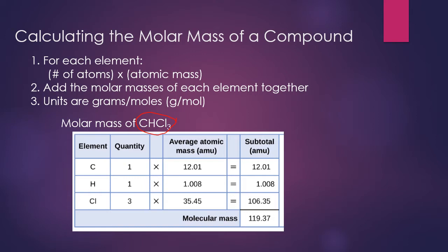For carbon, there is no subscript, so we assume one atom. The same goes for hydrogen. For chlorine, there is a subscript of three, meaning three atoms of chlorine are present. Next, we look up each element on the periodic table: carbon is 12.01, hydrogen is 1.008, and chlorine is 35.45. We multiply each element's count by its atomic mass, then add the totals together. The units of molar mass are grams per mole.